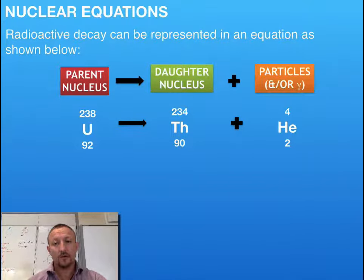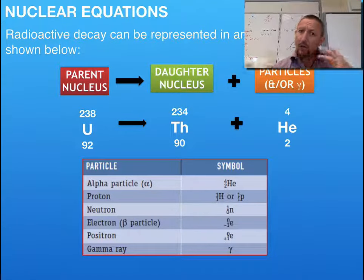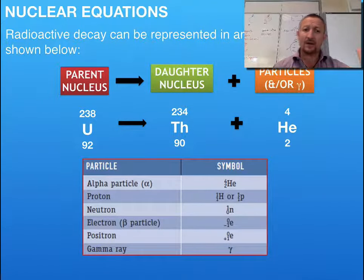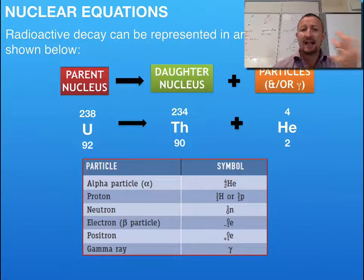Now remember, an alpha particle is a helium nucleus here. We've not got any electrons, we've only got two protons and two neutrons. So what we're now going to get is our parent nucleus, daughter nucleus and these particles.